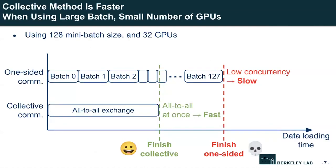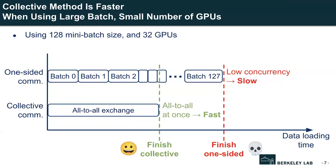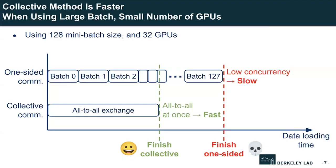Let's look at toy examples explaining these trends. In the first scenario — large mini-batch size (128) and small number of GPUs (32) — one-sided communication requires more transactions: to fetch 128 samples, 128 one-sided transactions are required, creating performance penalties at low concurrency. By contrast, collective communication pushes fewer but larger transactions, and as long as the total data exchanged is within network bandwidth capacity, collective communication achieves much higher performance due to its high parallelism.